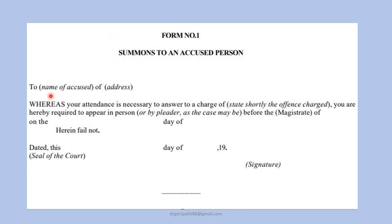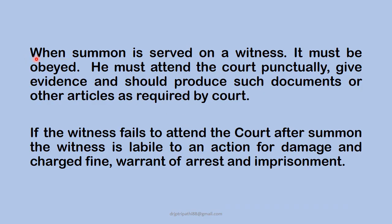This is a sample of a summon issued to an accused person. Everything is mentioned here — the time, the date, and when the accused person is to appear in court as a witness. The seal of the court and the signature of the presiding officer are also mentioned. When the summon is served on the witness, it must be obeyed. The witness must attend the court punctually, give evidence, and produce such documents or other articles as required by the court.